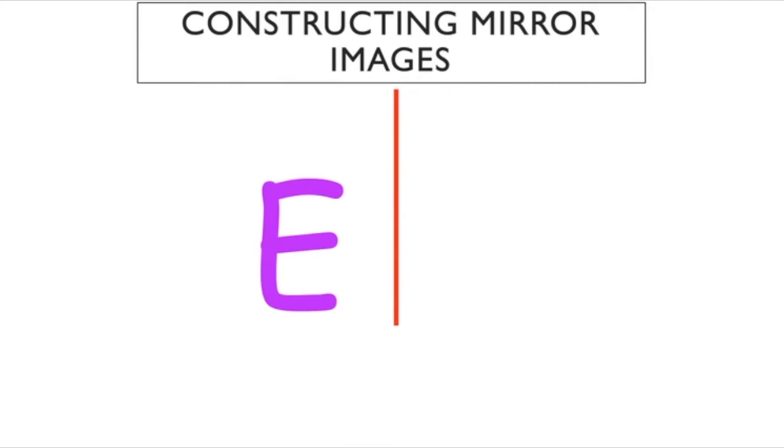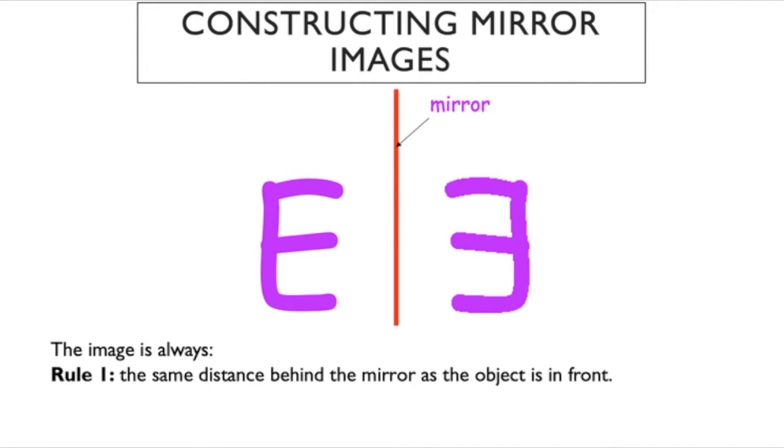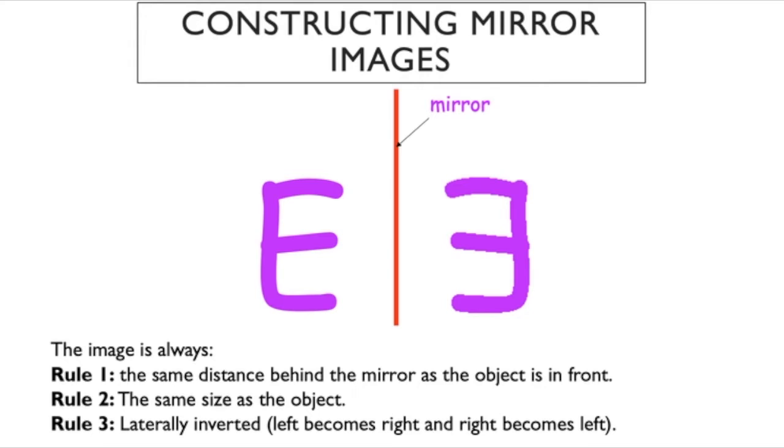So when we're constructing mirror images, we probably already know these rules, but the images are always the same distance behind the mirror as the object is in front and the same size as the object and what we call laterally inverted. The left becomes the right and the right becomes the left.